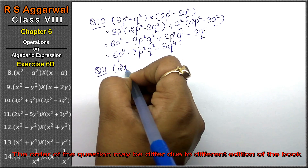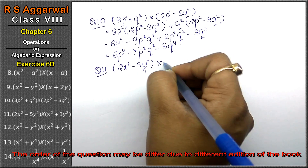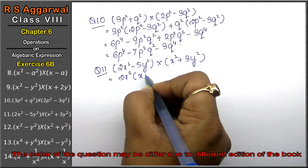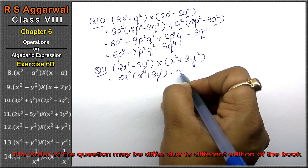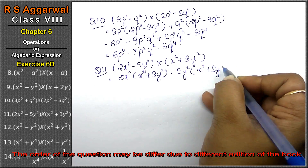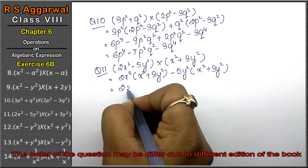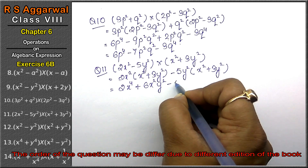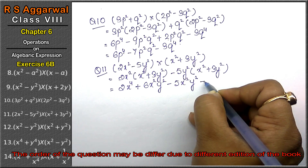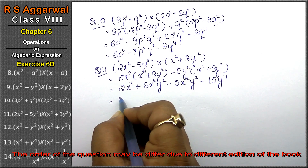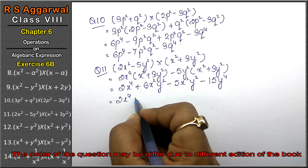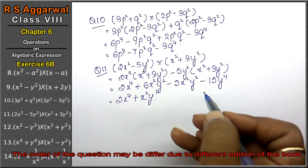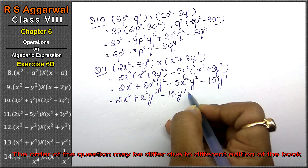Let's do question number eleven of Exercise 6B, that is algebraic expressions. Question number eleven is (2x squared - 5y squared) multiplied by (x squared + 3y squared). So: 2x squared multiplied by (x squared + 3y squared), minus 5y squared multiplied by (x squared + 3y squared). We get 2x to the power 4, plus 6x squared y squared, minus 5x squared y squared, minus 15y to the power 4. The opposite sign terms subtract: 2x to the power 4, plus x squared y squared, minus 15y to the power 4 is the answer.